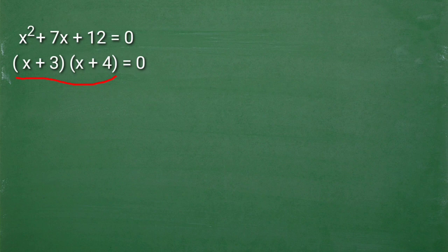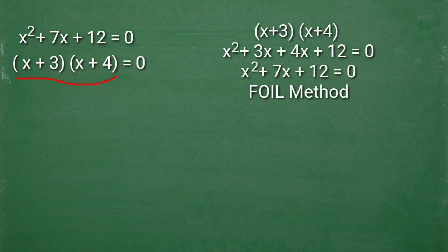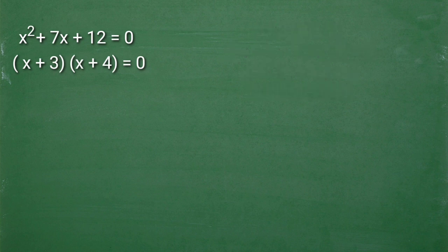So itong x plus 3 at x plus 4 natin, kapag minultiply natin or inexpand natin ito, ang result ay itong quadratic equation natin. At kung may mga case kayo na nagdadawt kayo sa factor nyo, pwede nyo siyang expand or imultiply. So pagkatapos nyo makuha yung factor, gagamit tayo ng zero product property.